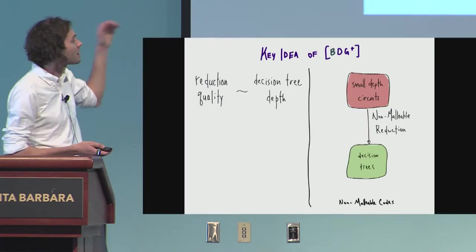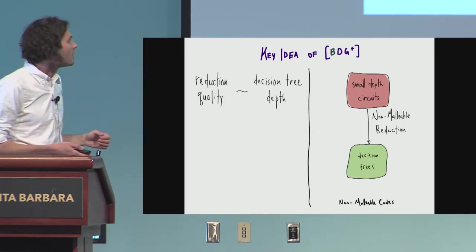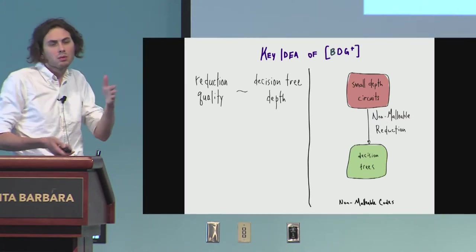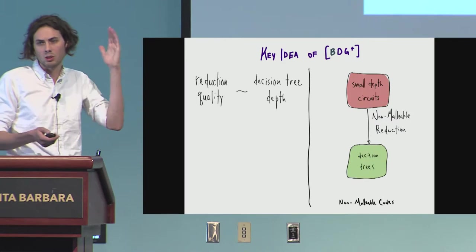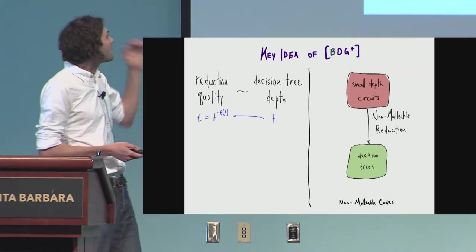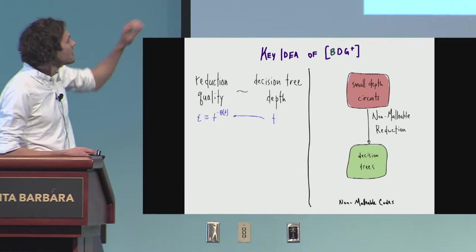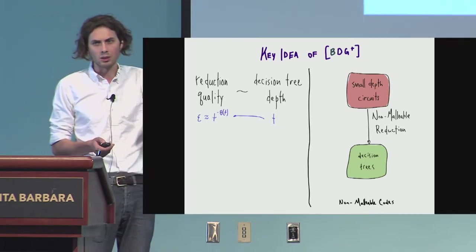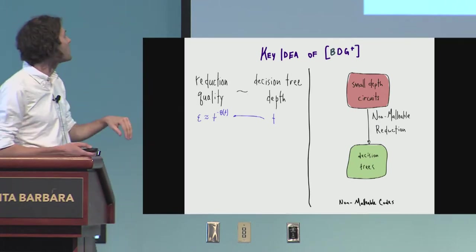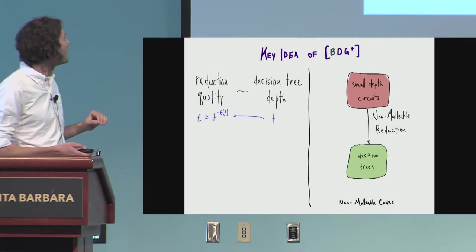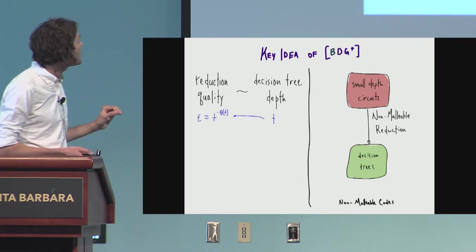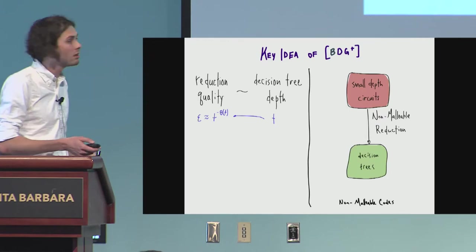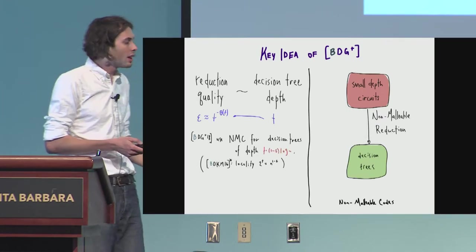So in this reduction, we use that fact that I just mentioned, that local functions sort of capture very small decision trees. This only works, this relationship only holds for depth at most log n. But the problem with this is the sort of quality of the reduction depends on the decision tree depth that you're going to. So if you want to go to depth t, you're paying, your epsilon you expect to get is essentially t to the minus t.